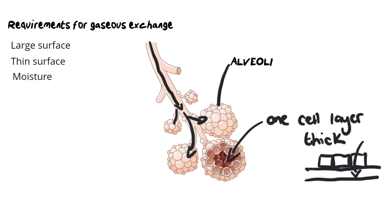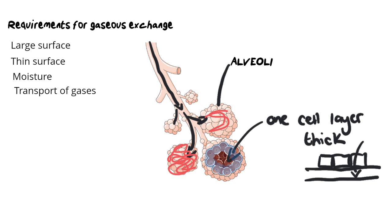The third requirement fulfilled by the alveoli is a moisture layer. There is a thin layer of moisture on the inside of the alveoli — not enough to cause drowning, but just enough for gaseous exchange to occur. The fourth requirement is efficient gas transport: a capillary network runs along the outside of each alveolus, allowing carbon dioxide to leave the blood and oxygen to enter the blood.